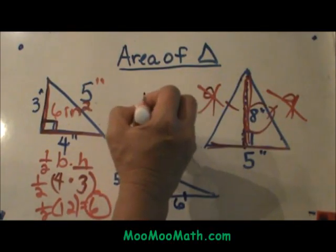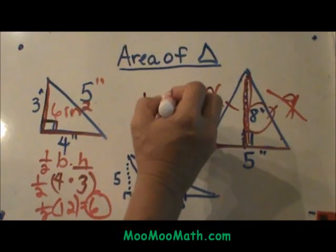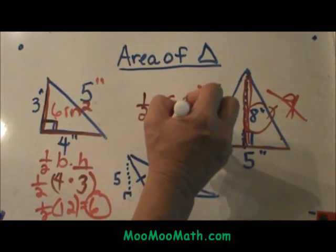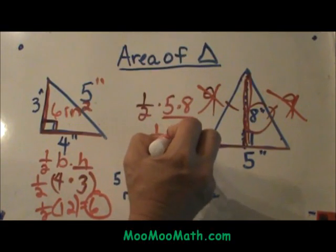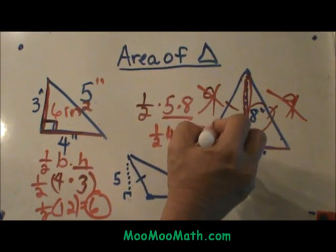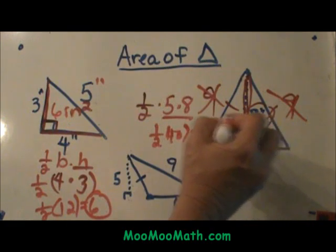So I just multiply the base which is five times the height or the altitude which is eight. That is 40. Half of 40 is 20. So this one is 20 square inches.